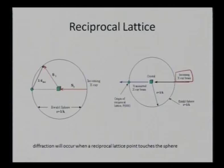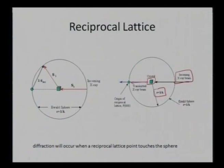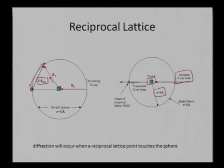The concept of reciprocal lattice involves an incoming X-ray beam — or electron beam depending on the kind of diffraction. Then I have the Ewald sphere, which is a radius of 1/λ. Upon interaction with the crystal some beam gets transmitted, but those obeying Bragg's law get diffracted, producing a diffraction spot on the Ewald sphere. This is my first spot; the transmitted beam gives a distance of 1/d — the inverse of the interplanar spacing.